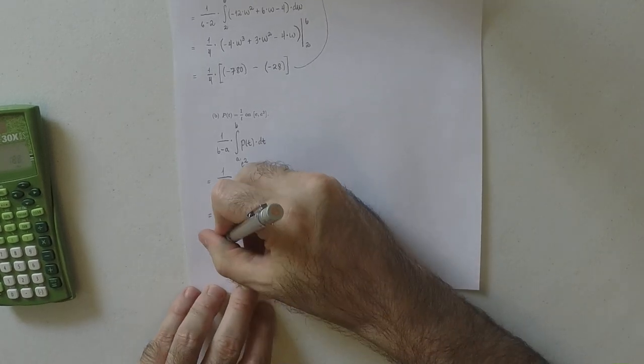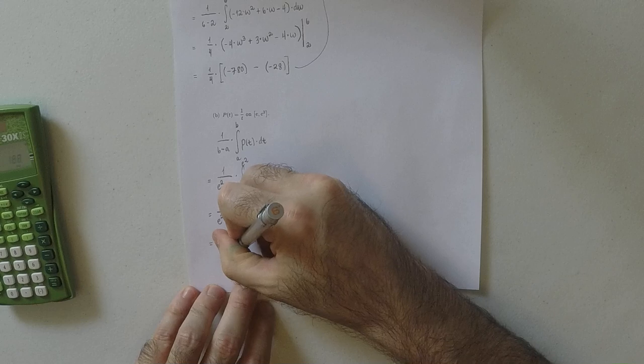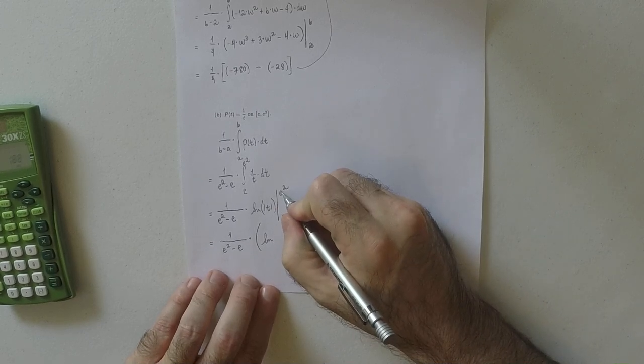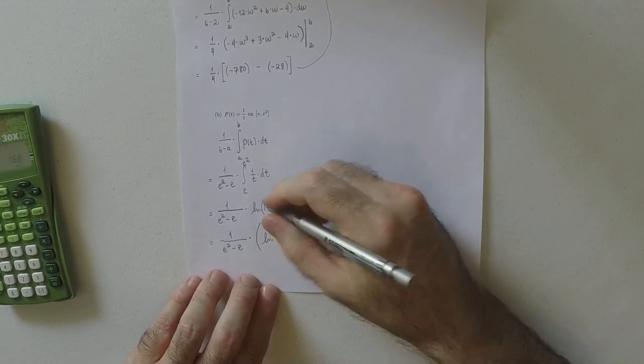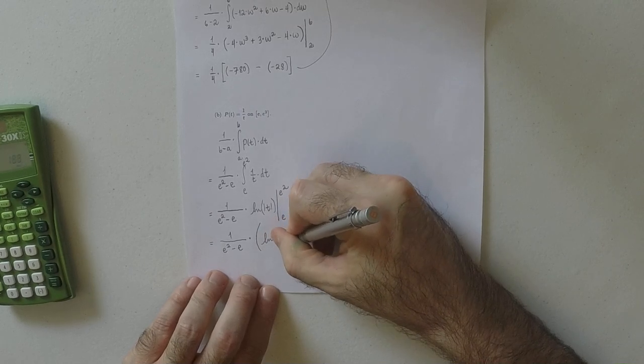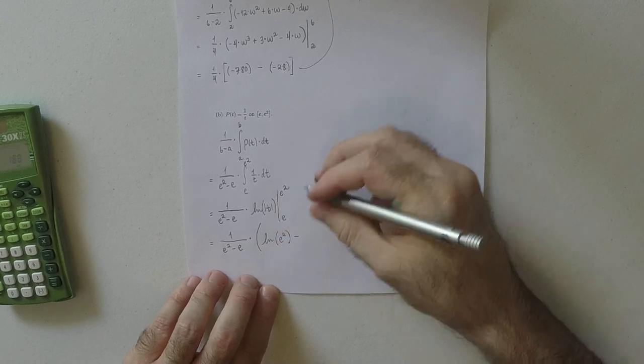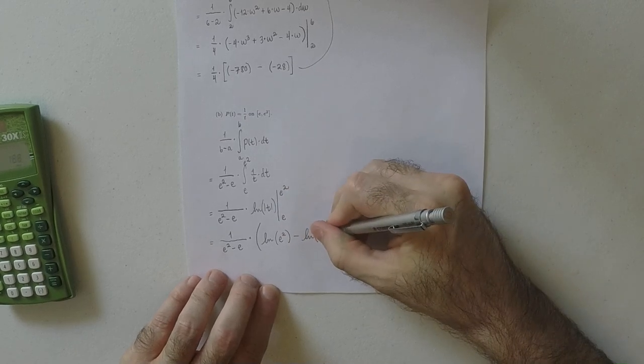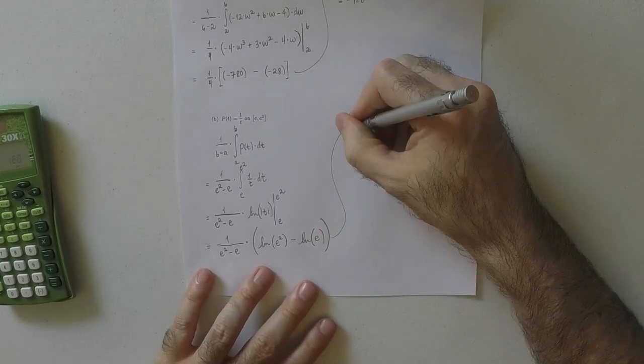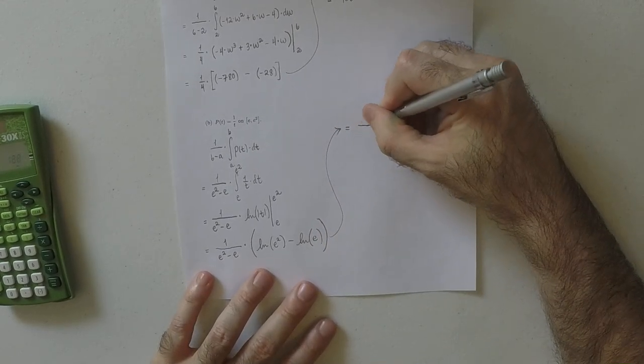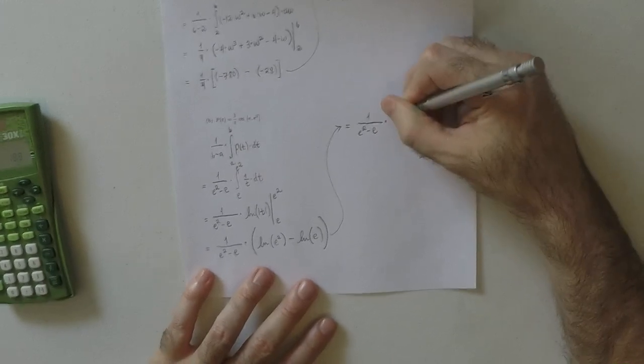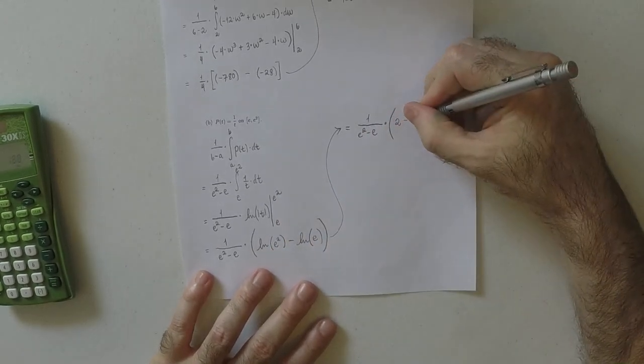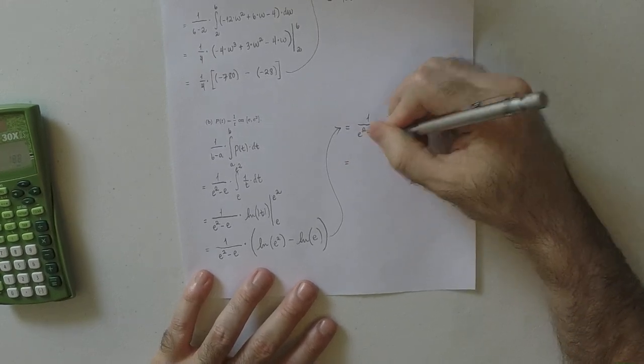So this is just a constant, so I'll leave it factored out. So that's 1 over e squared minus e, and then multiplied by the logarithm of, well, e is positive. So e squared is positive. So when you plug that in, you can just drop the absolute value. So that would be log of e squared. And then minus logarithm of, again, when you plug e in, e is positive. So the absolute value of e is just e. So we drop the absolute value. So this would be 1 over e squared minus e. And then multiplied by, well, the logarithm of e squared is 2. And the logarithm of e is 1. So that's just 1.